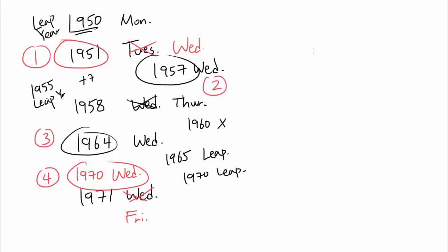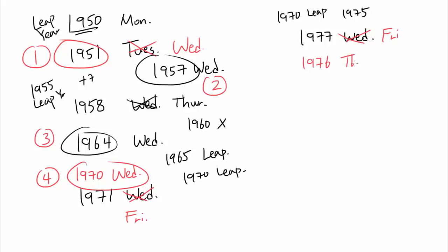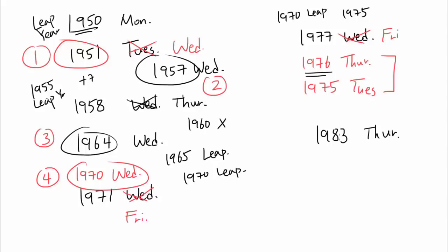Adding 7 to 1970, you'd expect 1977 to be Wednesday. But 1970 and 1975 are both leap years, so 1977 is actually Friday. Going back: 1976 is Thursday. How about 1975? Since 1975 is a leap year, it's actually Tuesday — no Wednesday there. Looking at 1976 and adding 7 gets us to 1983. Since 1980 is not a leap year, 1983 is indeed Thursday, which tells us 1982 was Wednesday. That's five.